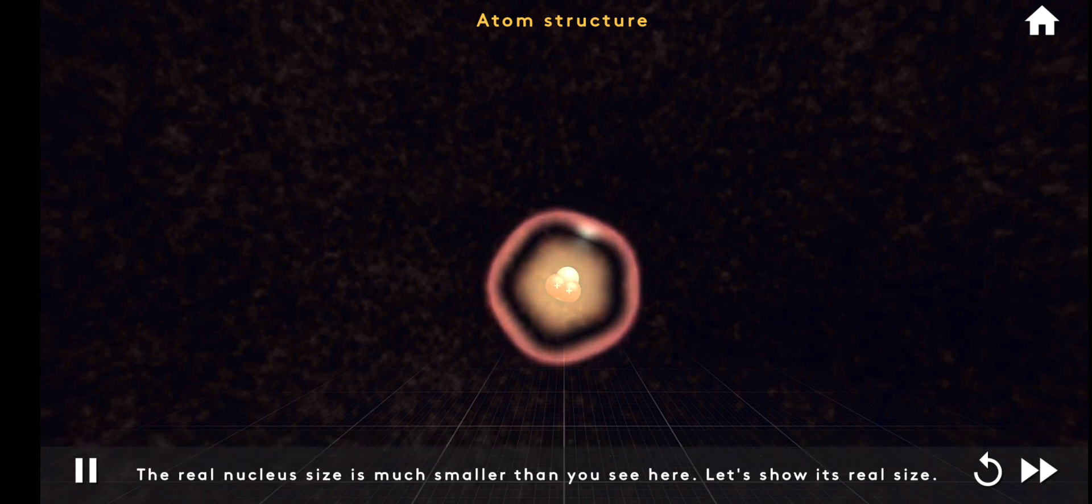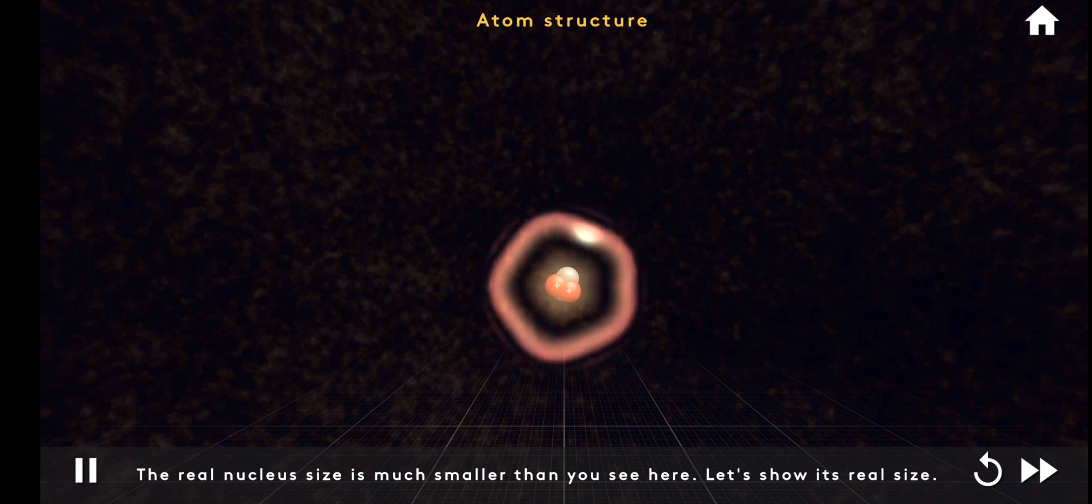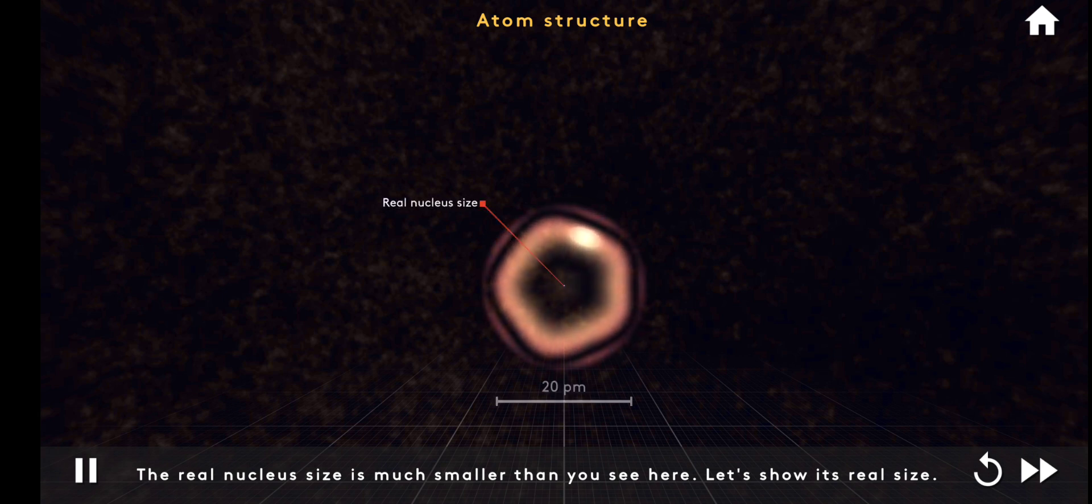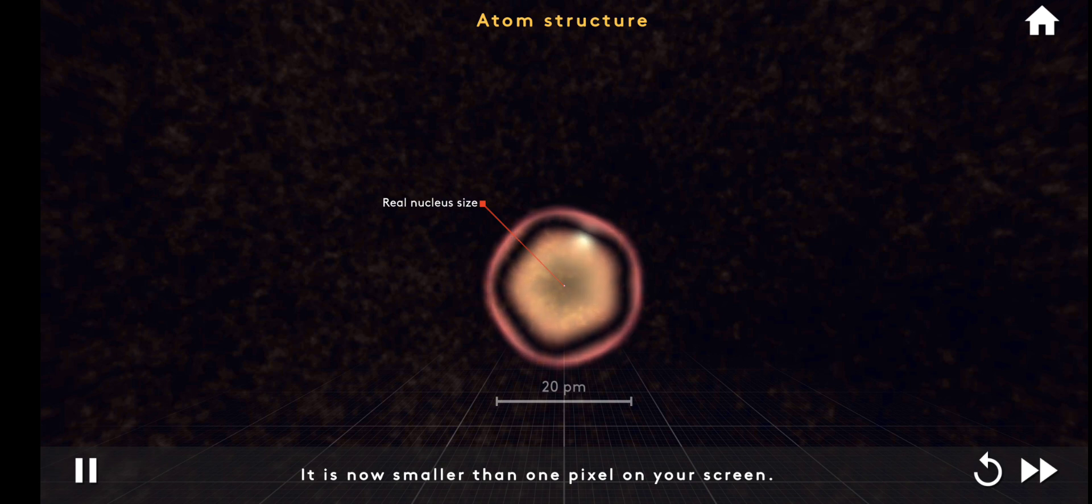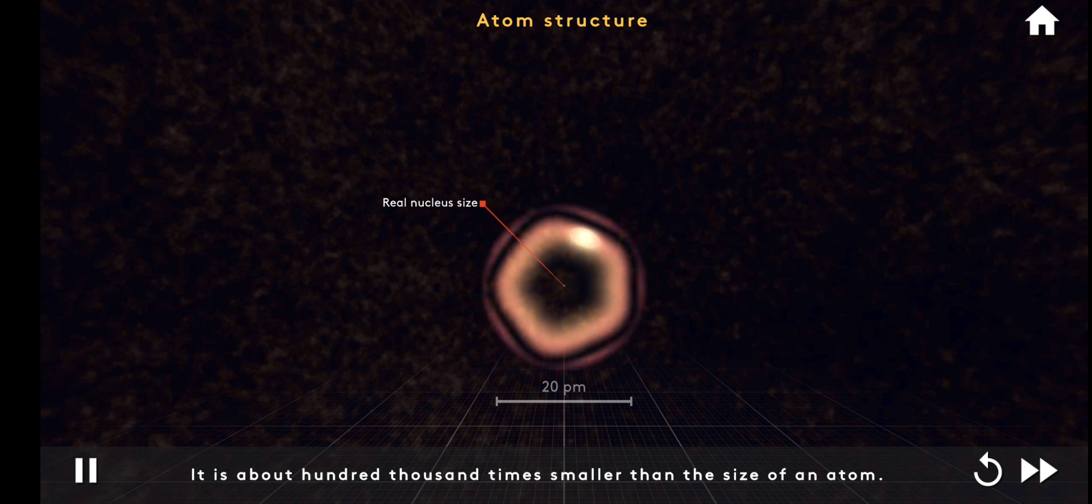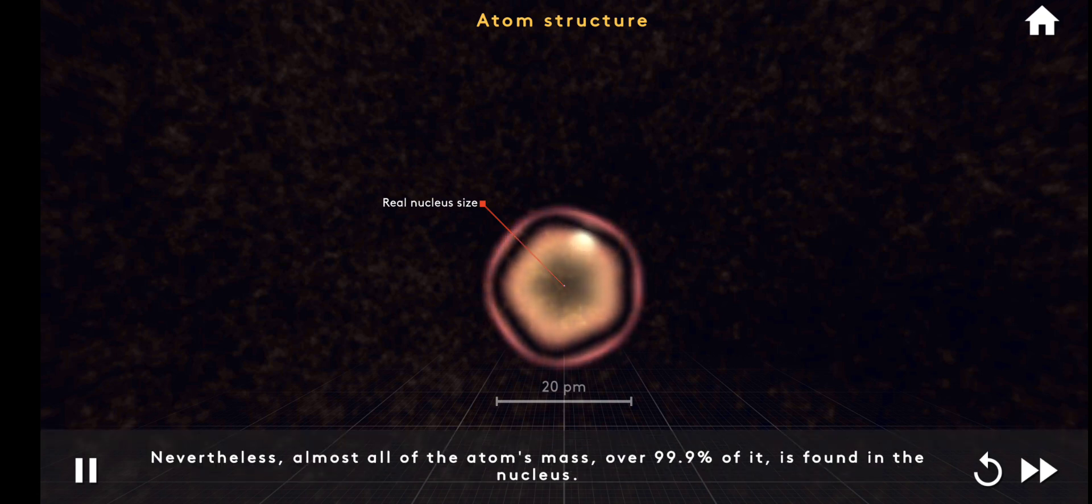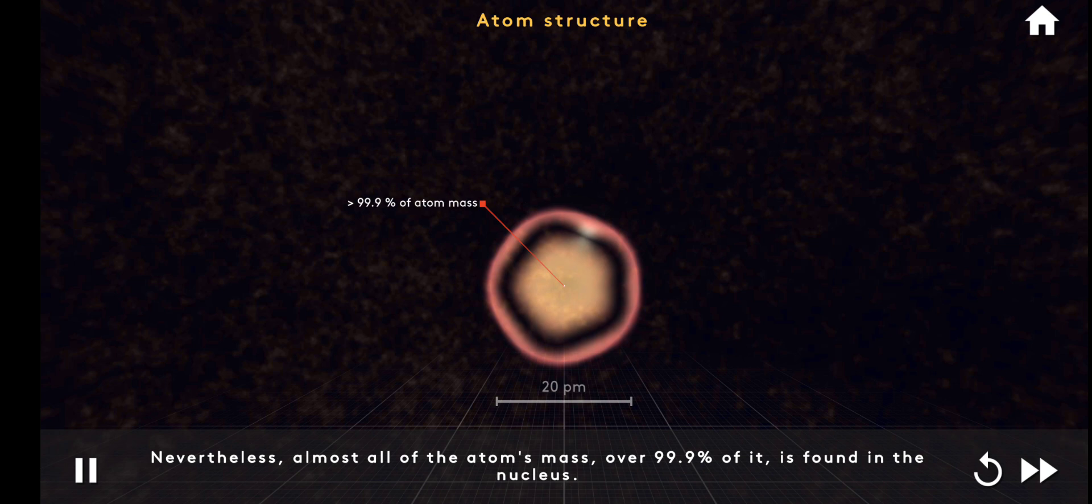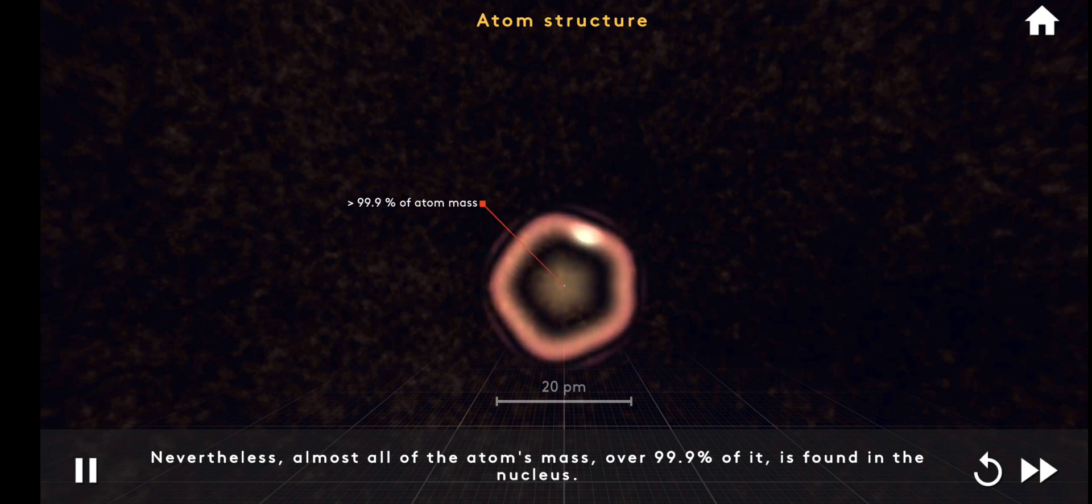The real nucleus size is much smaller than you see here. Let's show its real size. It is now smaller than one pixel on your screen. It is about 100,000 times smaller than the size of an atom. Nevertheless, almost all of the atom's mass, over 99.9% of it, is found in the nucleus.